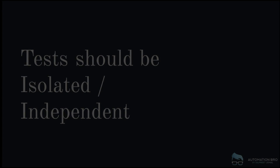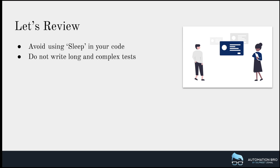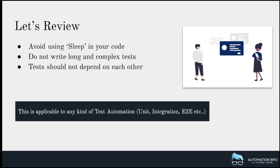Let's do a quick review of what we covered. Number one: avoid using sleep in your code. Number two: don't write long and complicated tests. Number three: your tests should not depend on each other. Keep in mind this is applicable to any kind of test automation — whether unit, integration, or end-to-end — the principles remain the same. Hopefully if you avoid these mistakes you can create a stable and efficient test framework.